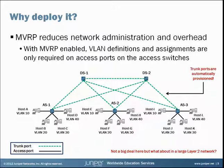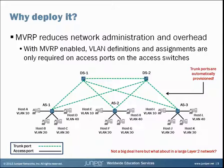What you do need to worry about is the access switch configuration for the access ports. Here at the bottom, AS1, 2, and 3 have various access ports connecting to different hosts for the four different VLANs — VLAN 10, 20, 30, and 40. That would all need to be configured. And then for the trunk ports, simply enable MVRP on those specific trunk ports.